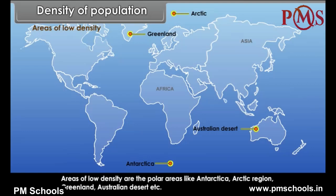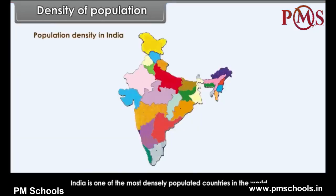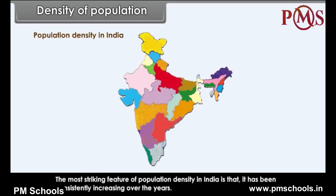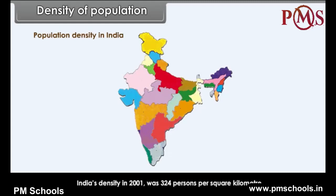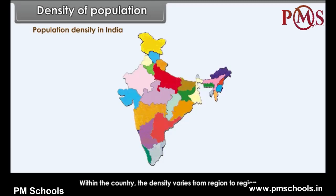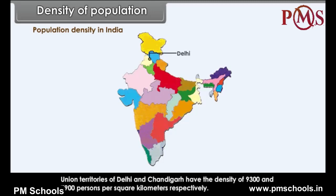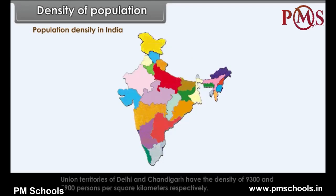Population Density in India: India is one of the most densely populated countries in the world. Its density has been consistently increasing over the years. India's density in 2001 was 324 persons per square kilometer. The union territories of Delhi and Chandigarh have densities of 9,300 and 7,900 persons per square kilometer respectively, whereas Arunachal Pradesh and Mizoram have densities of 13 and 43 persons per square kilometer respectively.